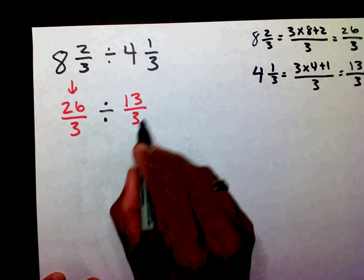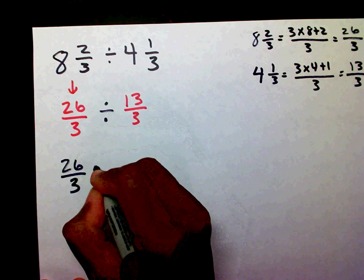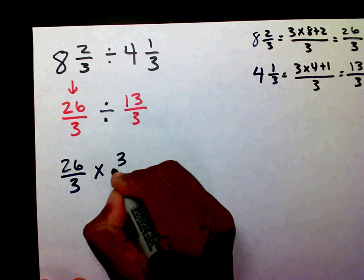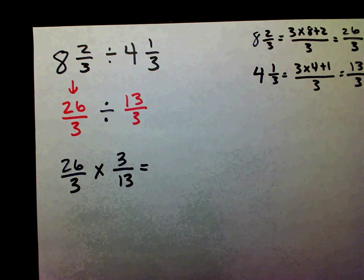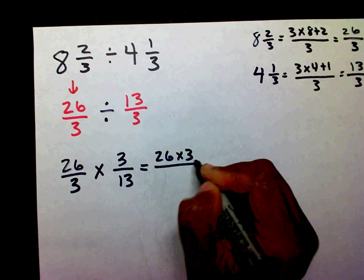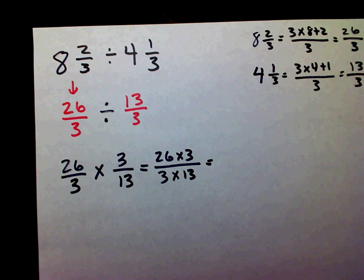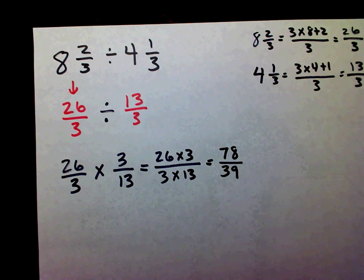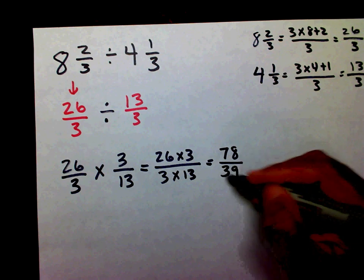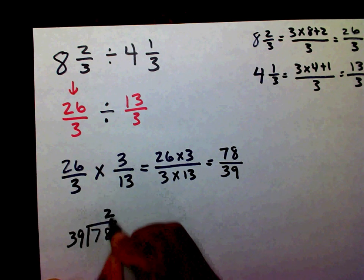I need to change this division problem into a multiplication problem. I'm going to say twenty-six-thirds times the reciprocal of thirteen-thirds, which is three over thirteen. I'll multiply twenty-six times three in the numerator and three times thirteen in the denominator. Twenty-six times three is seventy-eight, and three times thirteen is thirty-nine. So I'm going to take seventy-eight divided by thirty-nine — thirty-nine goes into seventy-eight two times.